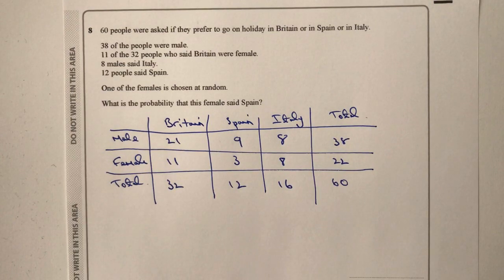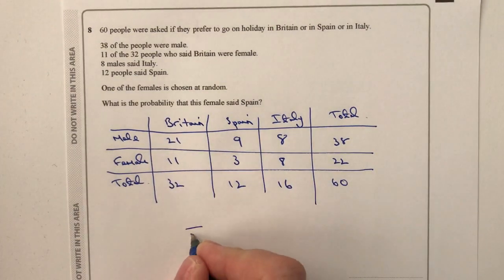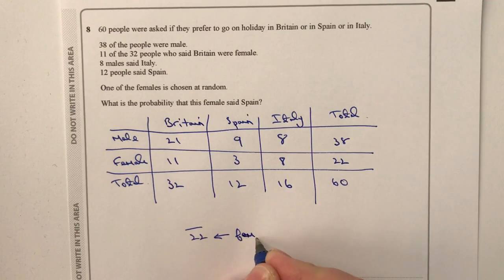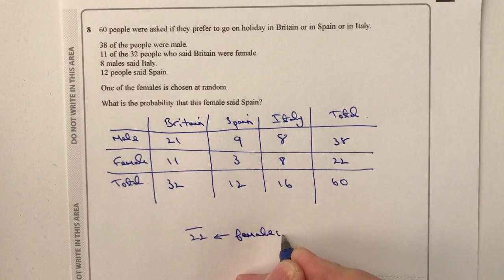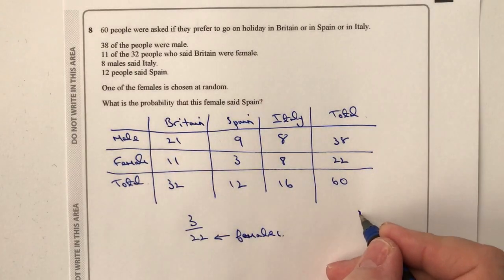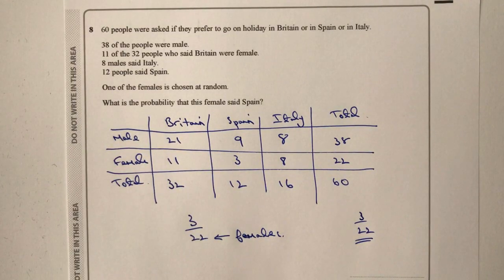The actual question is: what is the probability that a randomly chosen female said Spain? We know there are 22 females and three of them said Spain, so the answer is 3 out of 22. It appears complex on the surface and you do have to spend time putting together the grid, but the final calculation is relatively straightforward.